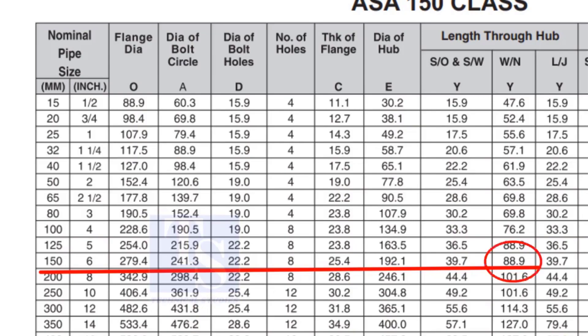Check the height of the flange in the table. Since the pressure rating is 150, the height of the flange is 88.9mm. Note down the height.